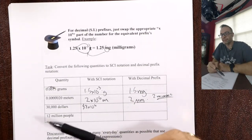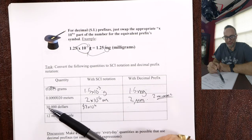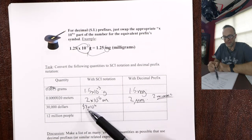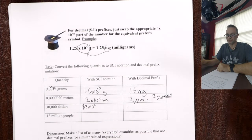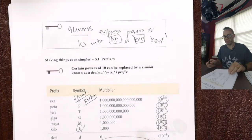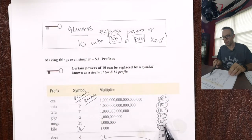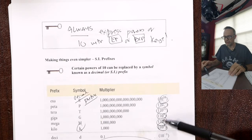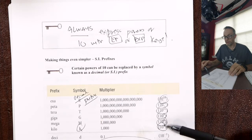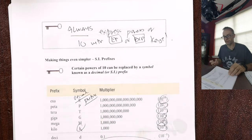Next: $30,000. In scientific notation that's 4 jumps — 3 times 10 to the 4. But if we look at our sheet, there's no prefix for 10 to the 4, because all the prefixes are multiples of 3. There's no 4. So how do we convert 3 times 10 to the 4 to the nearest power with a multiple of 3 so we can use a decimal prefix?